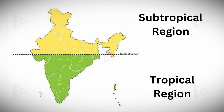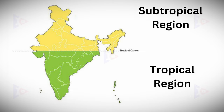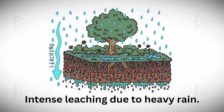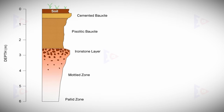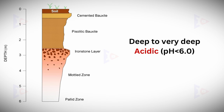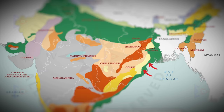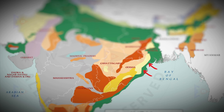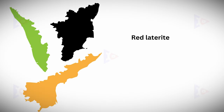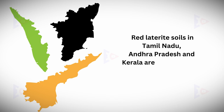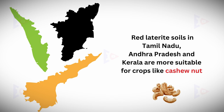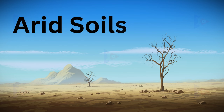Laterite soil is derived from the Latin word 'later' meaning brick. It develops under tropical and subtropical climates with alternating wet and dry seasons and is the result of intense leaching due to heavy rain. Lateritic soils are mostly deep, very deep and acidic (pH less than 6), generally deficient in plant nutrients. They occur mostly in the southern states, the Western Ghats region of Maharashtra, Odisha, parts of West Bengal and north-eastern regions. Red laterite soil in Tamil Nadu, Andhra Pradesh and Kerala is most suitable for cashew nut.